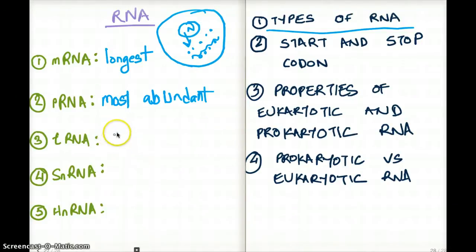tRNA is the one which brings amino acids. The amino acids that are present in the cytoplasm to our ribosomal RNA. It brings amino acids to our ribosomal RNA.